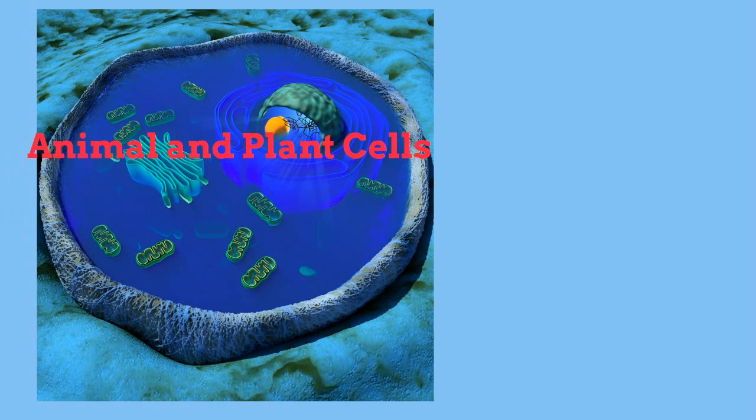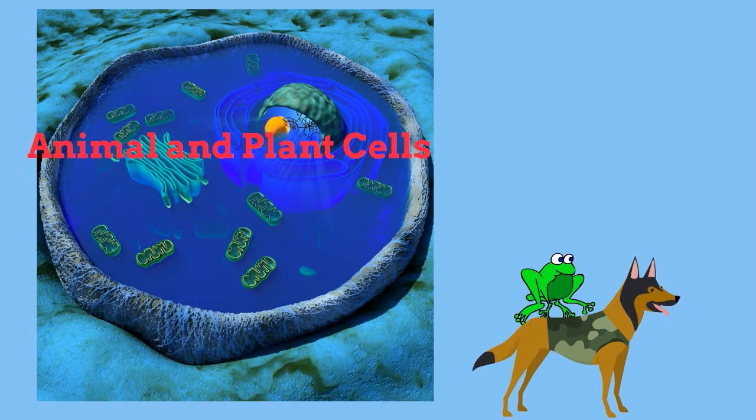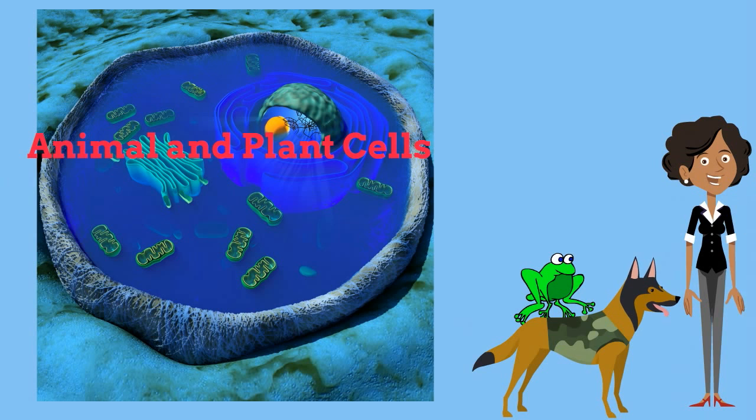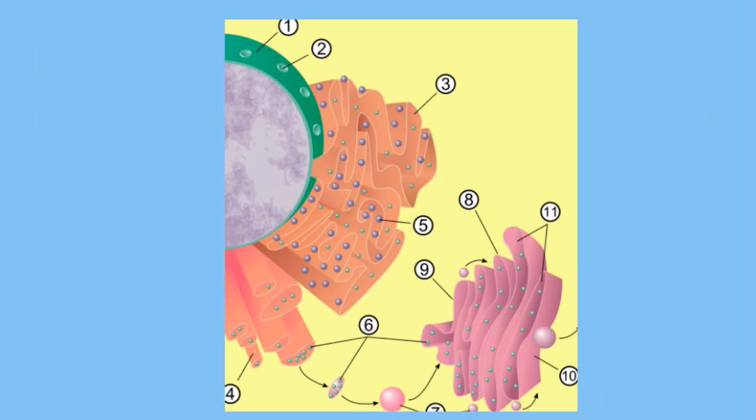First, the ER repackages proteins and biochemicals into vesicles. It then pinches these vesicles off and sends them to the Golgi Apparatus.